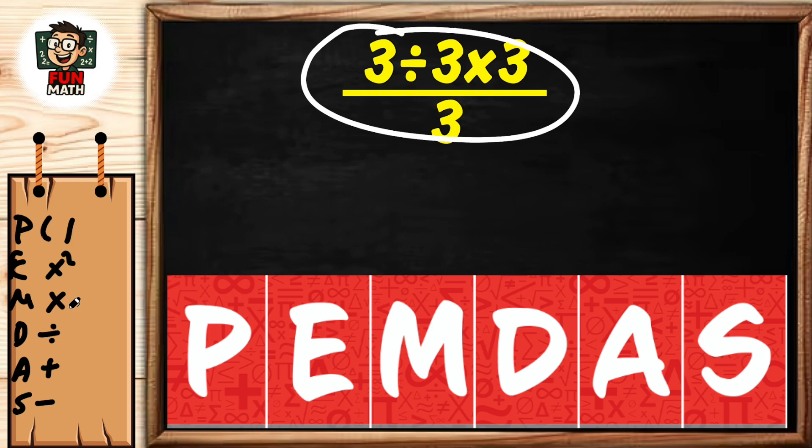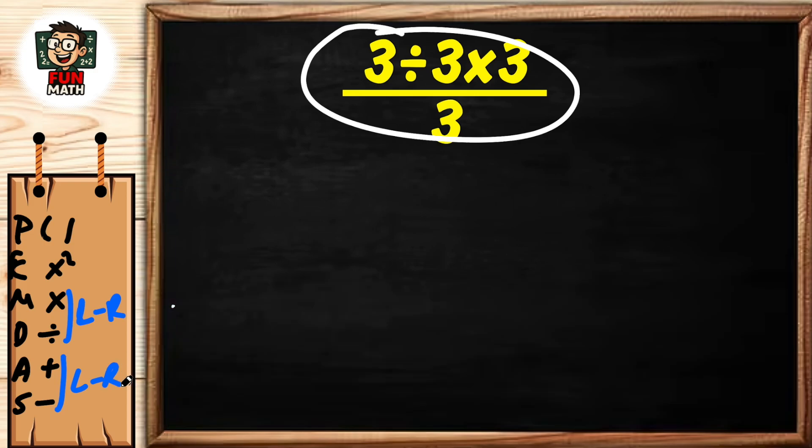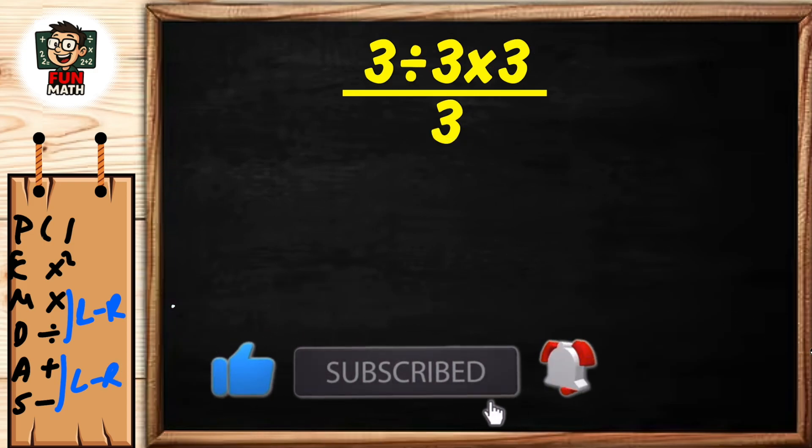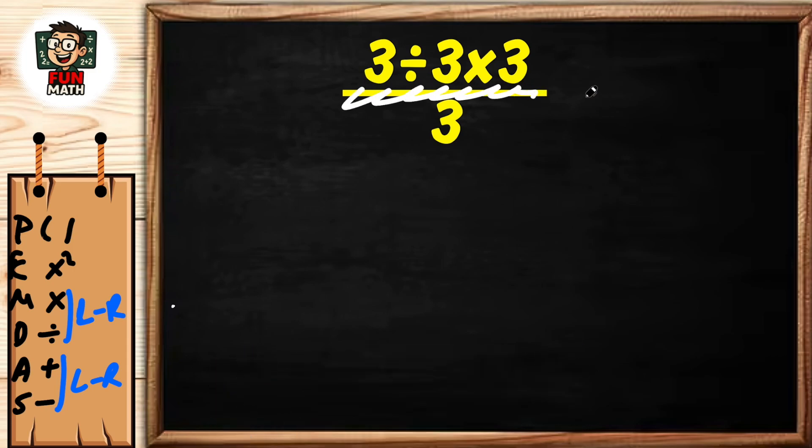We have one more important feature here: there is no order between multiplication and division operations - they are performed from left to right. Similarly, addition and subtraction have no order and are performed from left to right. Let's apply this rule to our equation. The fraction bar represents division.